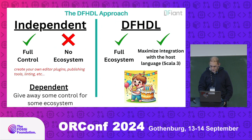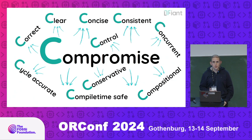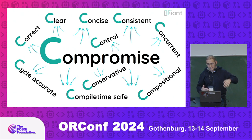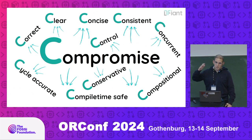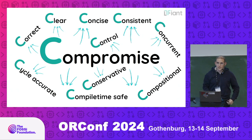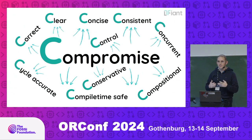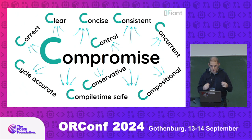In DFHDL, the concept is compromise — trying to have the cake and eat it too. C is about the compromise: you need a clear, concise, and consistent language. You want concurrency, cycle accuracy, correctness, and control, yet you want to be conservative, compliant, and safe — everything is stretching in every direction. Basically it's the art of compromise that you need to go through when designing an HDL.